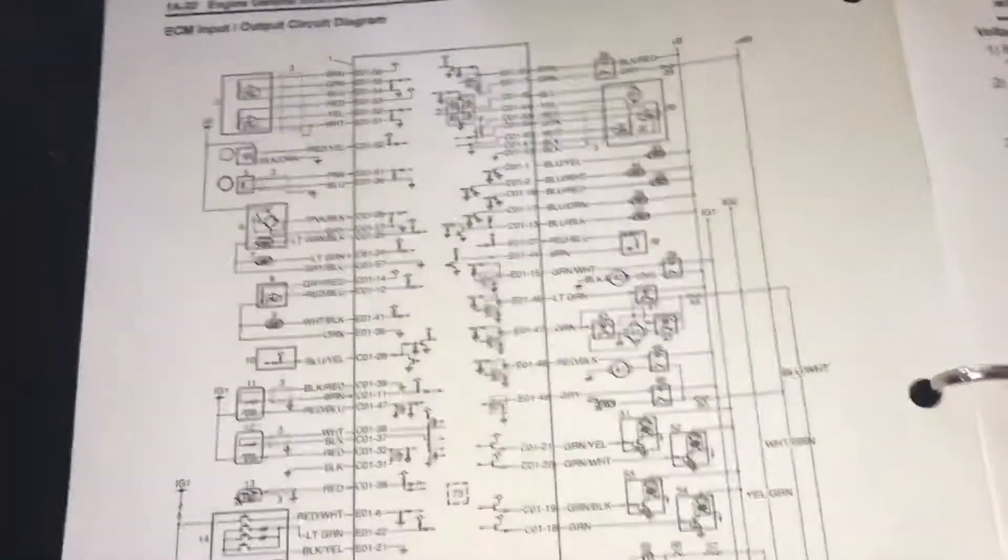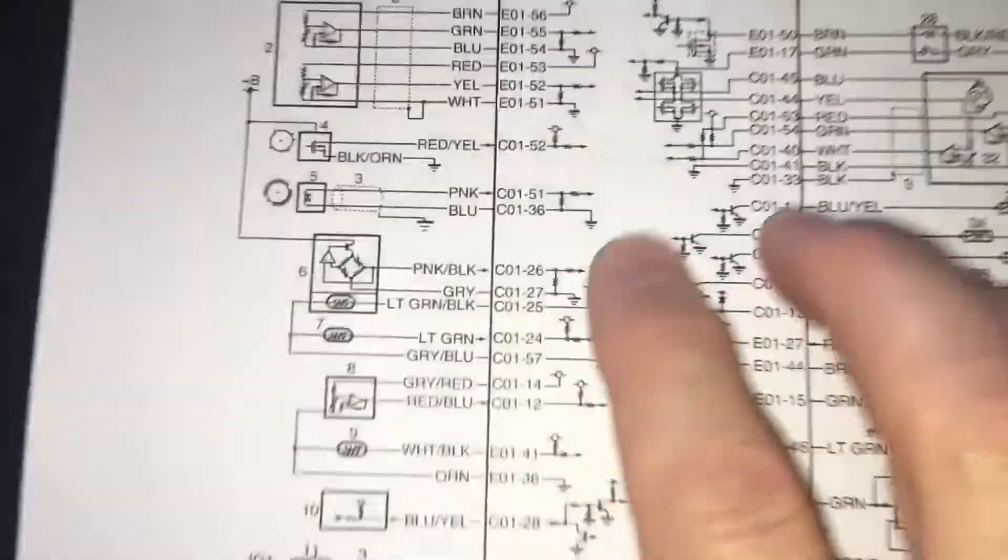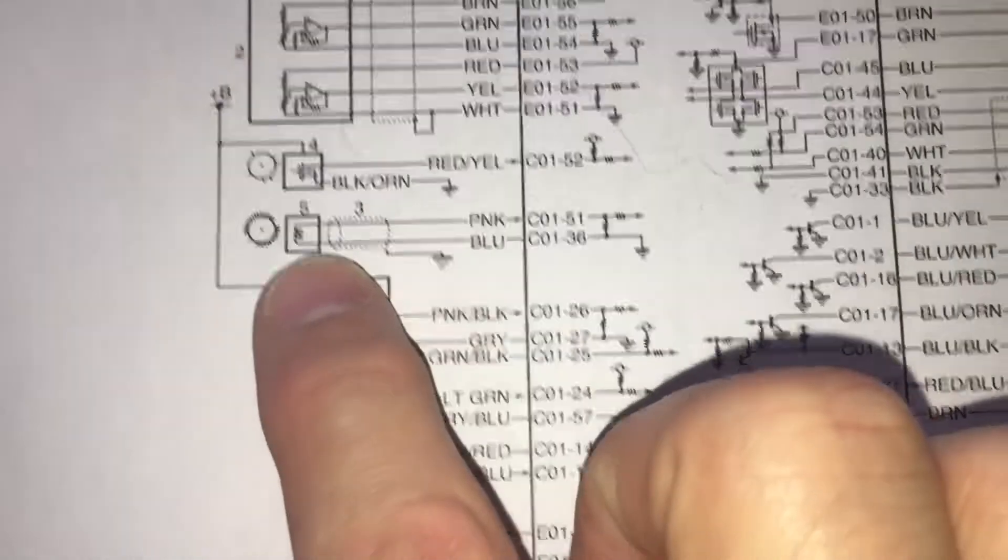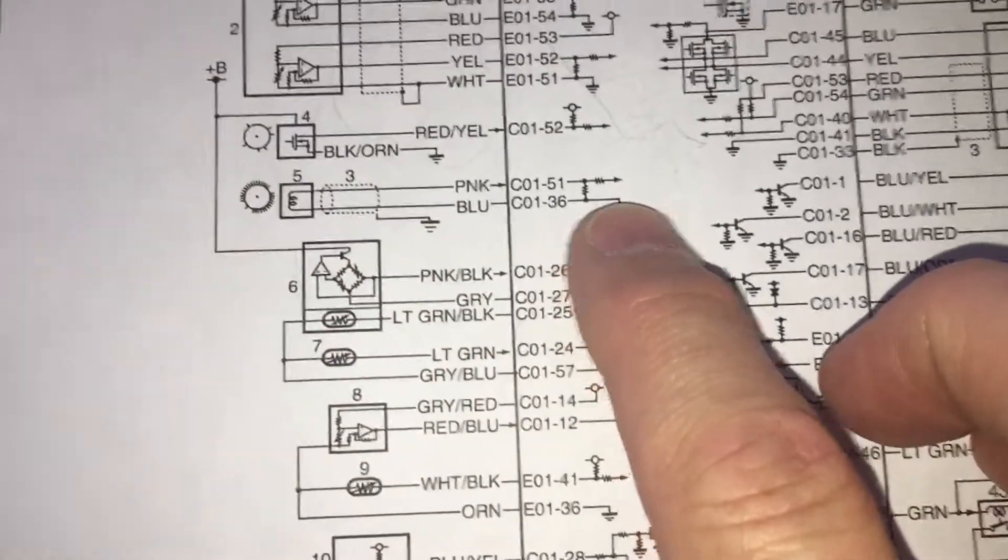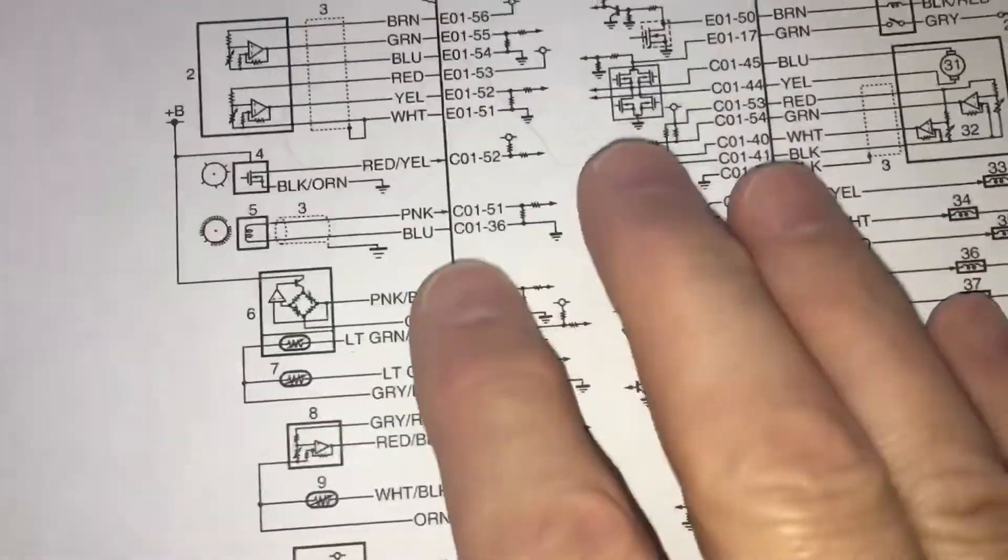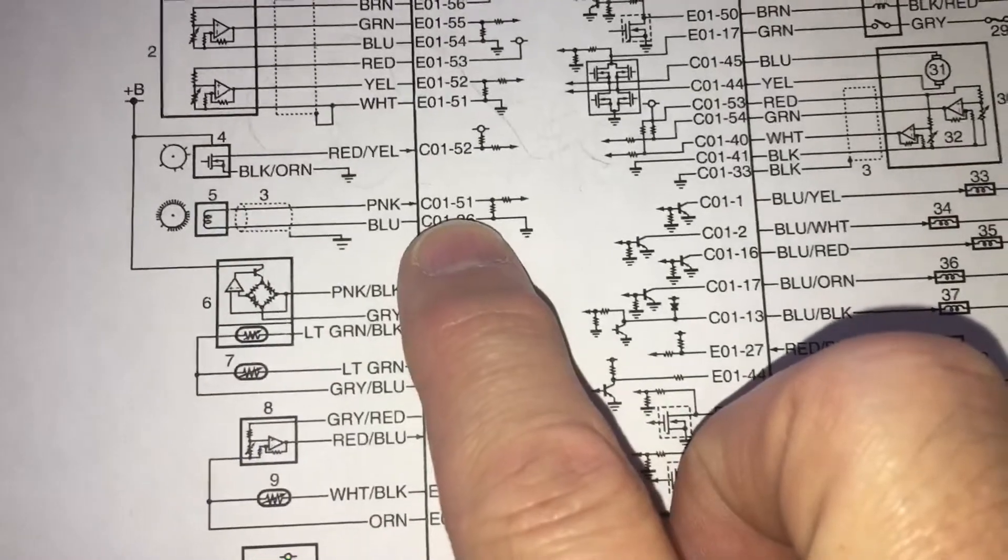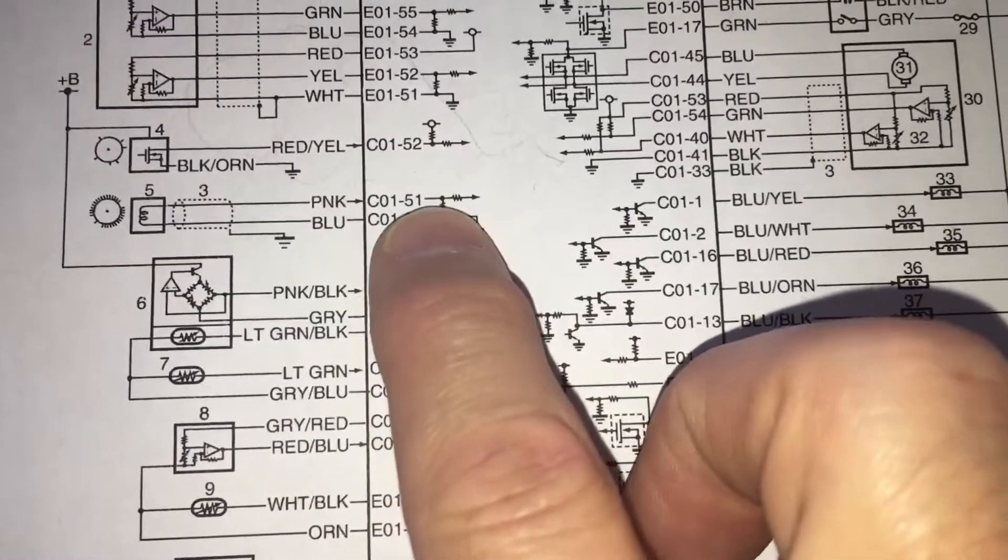So the format that I'm going to basically follow is how to actually look at the diagram, how to interpret it. Again, in the case of the crank sensor that we're going to start with, we'll look at the sensor itself, this interface wiring, how you actually read the diagram. So you can see here that we have some color coding on the wiring, and we have a connector number and pin number.